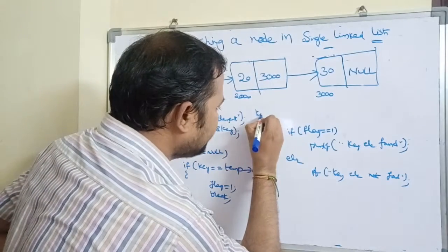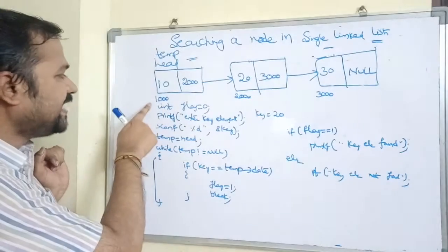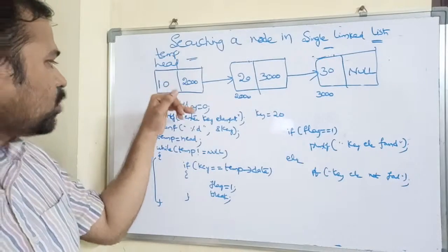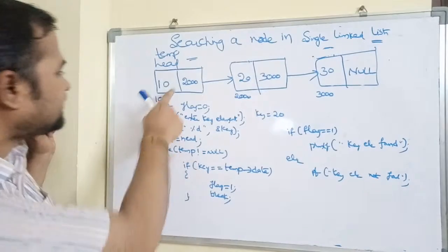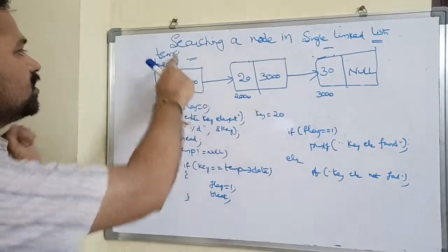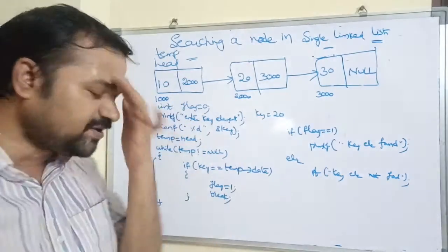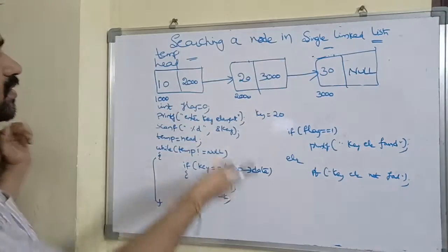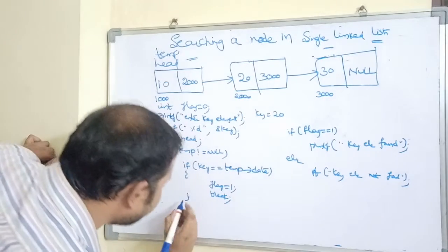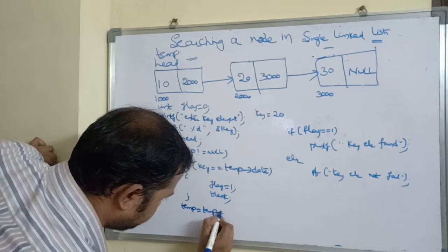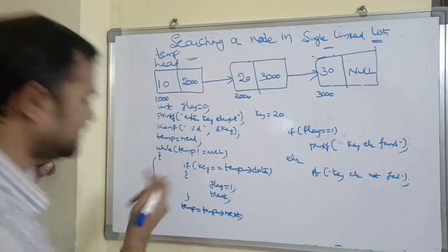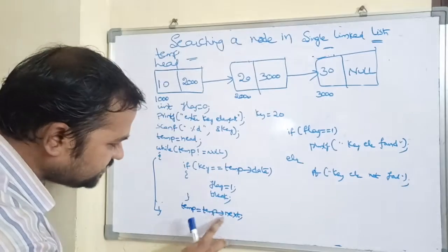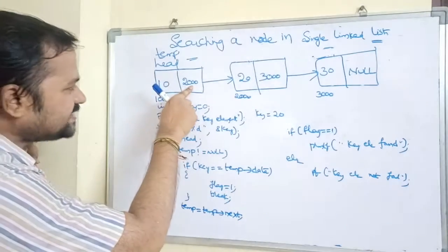Let's trace through the logic with key element 20. temp is set to head, which is 1000, so temp is placed at memory location 1000. We check while temp != null — 1000 is not equal to null, so the condition is true. We compare key == temp->data: 20 == 10, which is false. So we move to the next node using temp = temp->next. What is 1000's next? It is 2000, so temp becomes 2000.